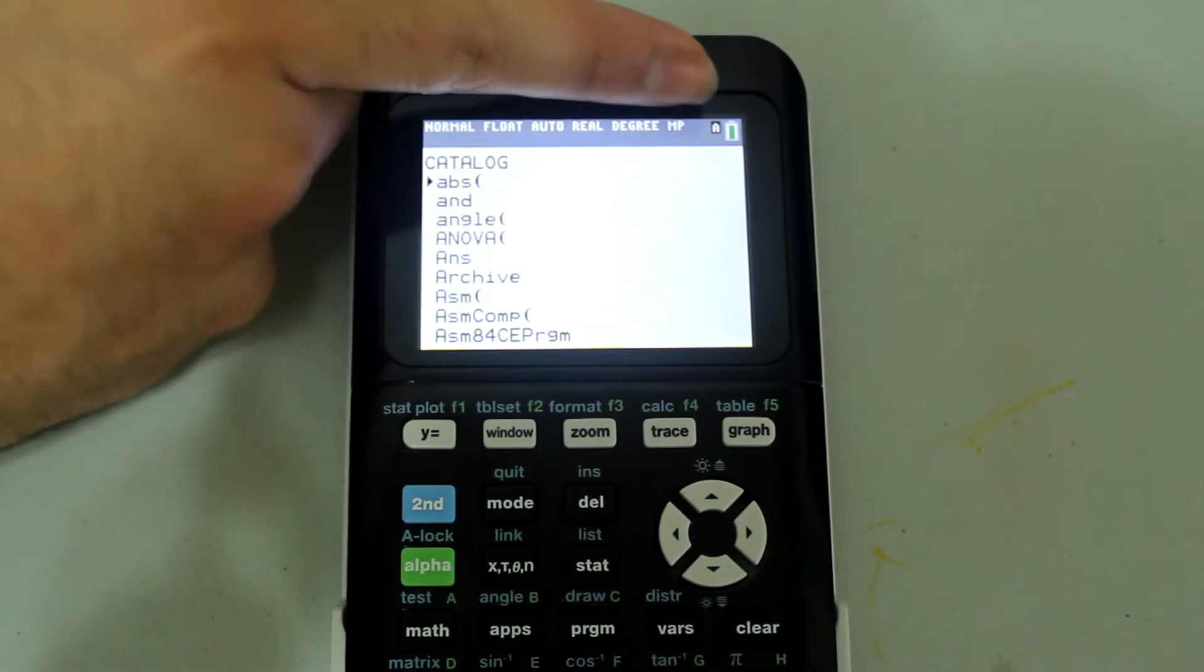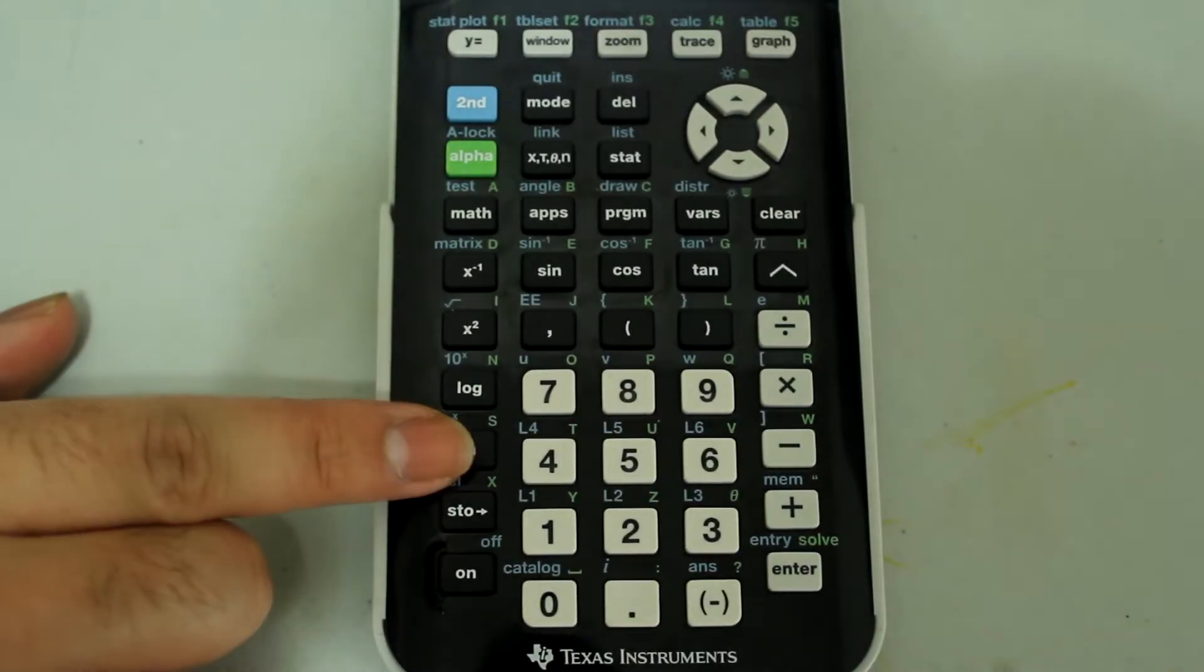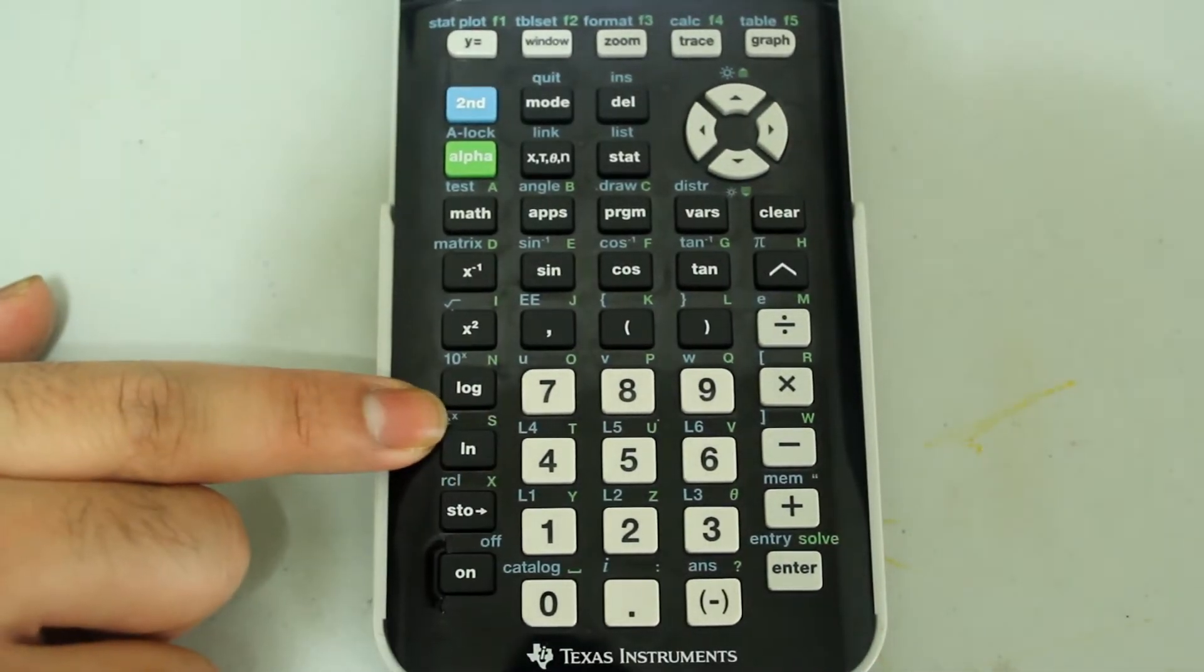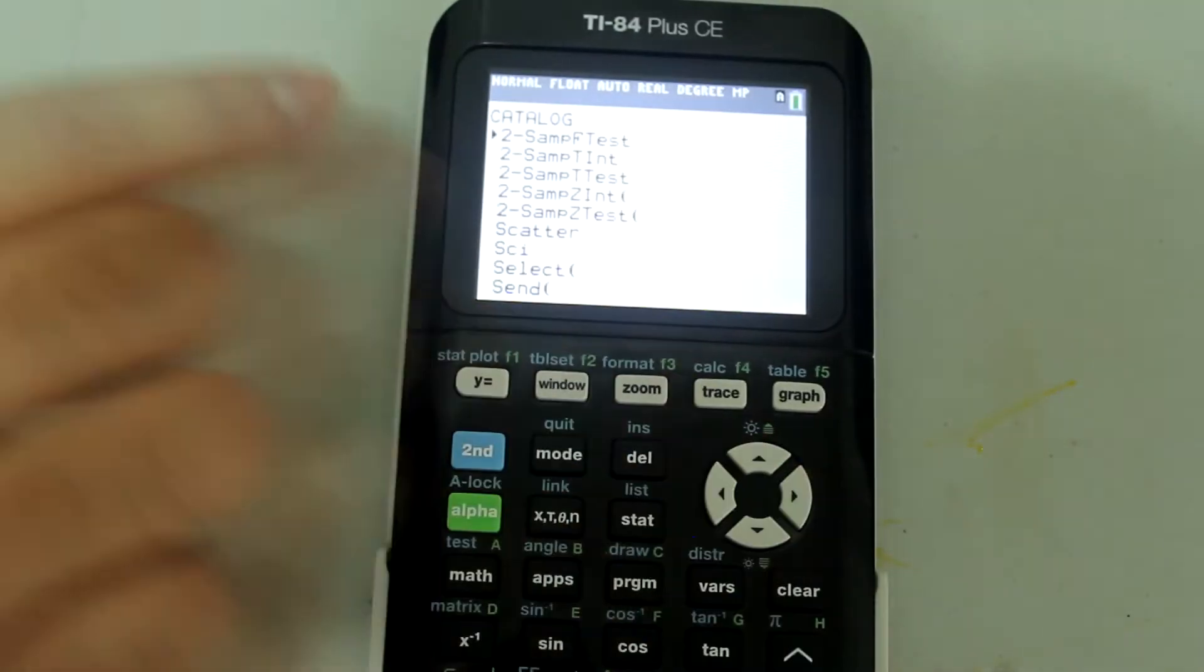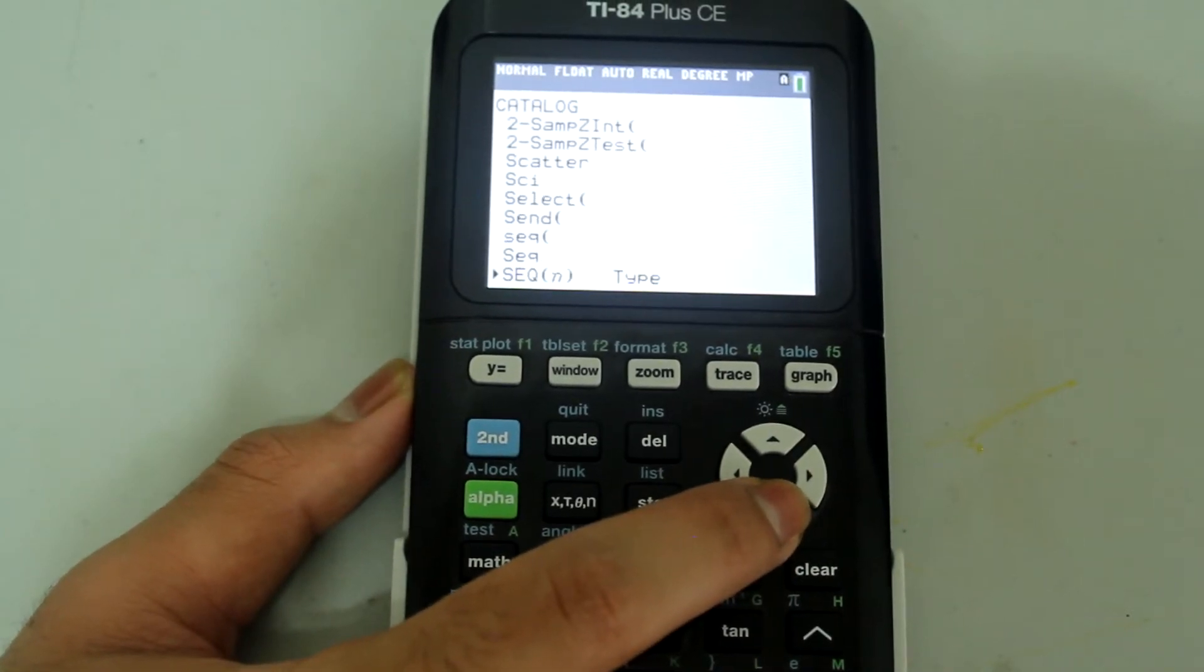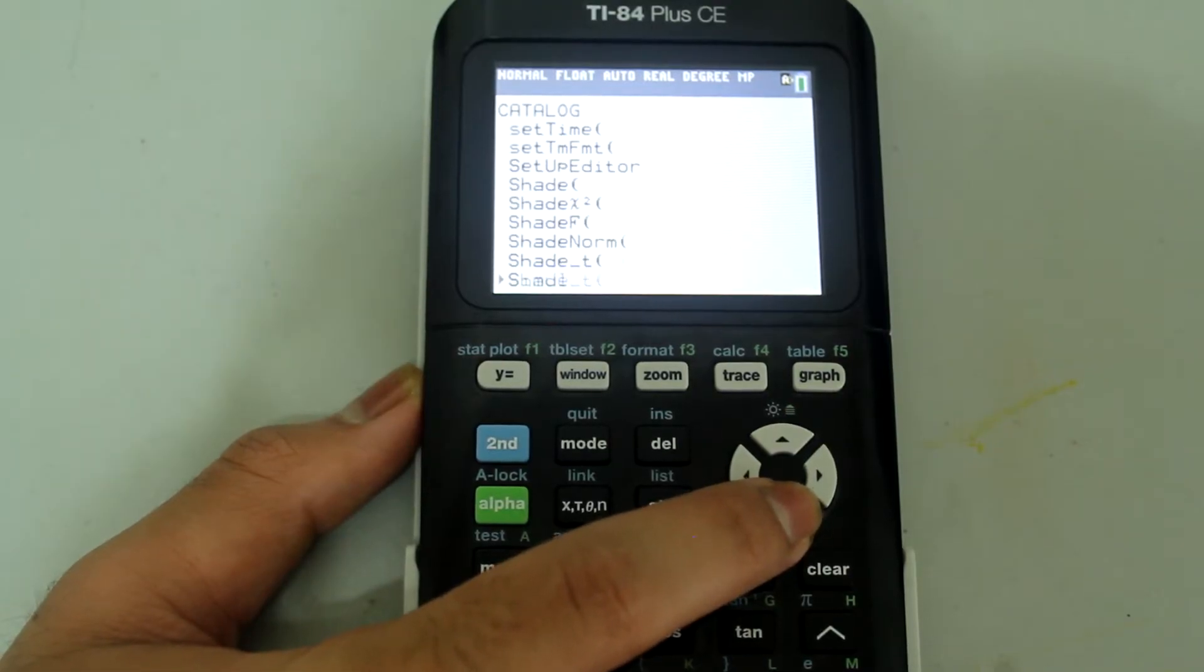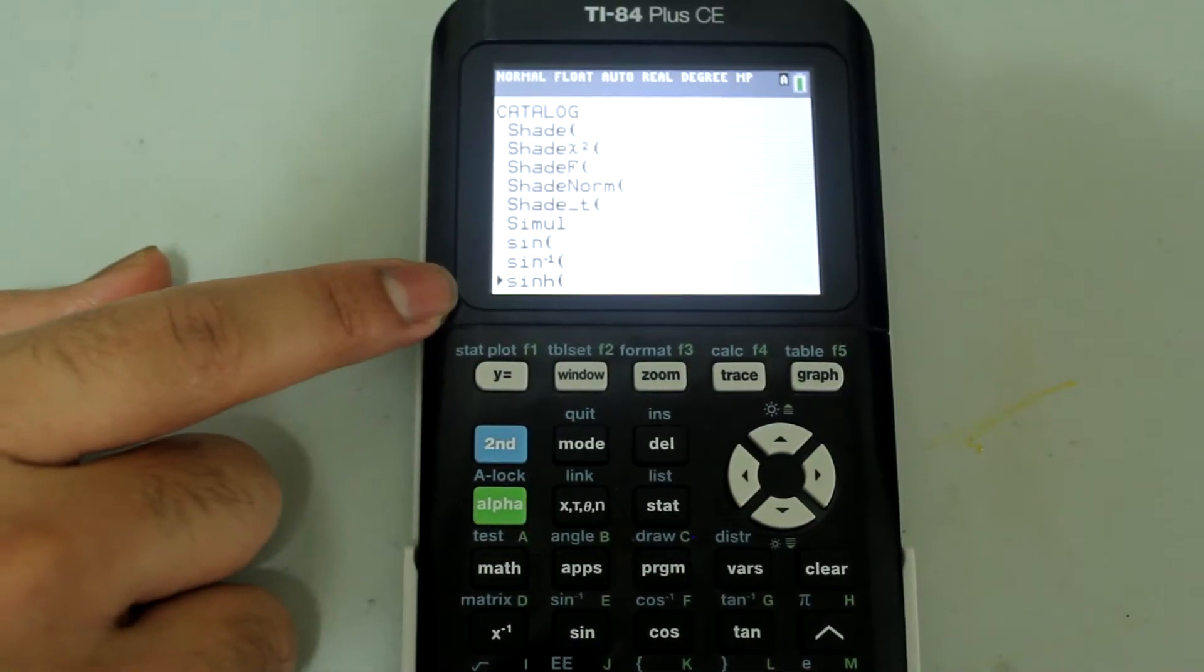Notice this little alpha symbol appears in the top right corner. This means you can type in the first letter of the option you want. I'm going to press the natural log button for S because I want sinh. Then I'll arrow down until I get to sinh. Once the cursor is next to sinh, press Enter.